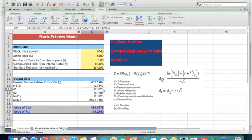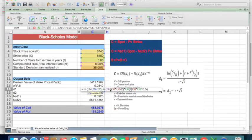d1 is nothing but the natural log of stock spot price divided by strike price plus risk-free rate plus half of the square of standard deviation times time, and divided by the standard deviation times root of time.